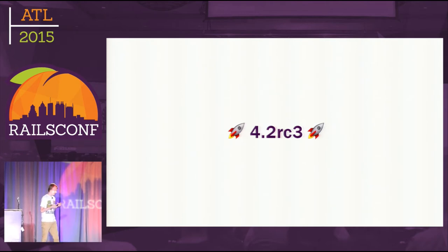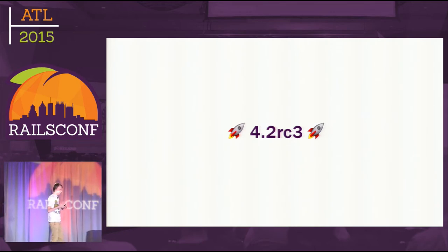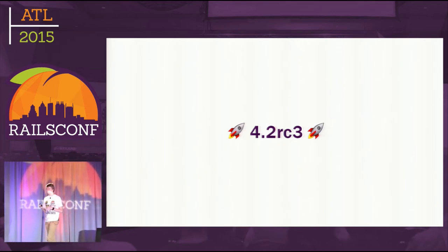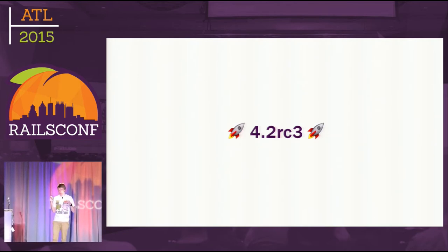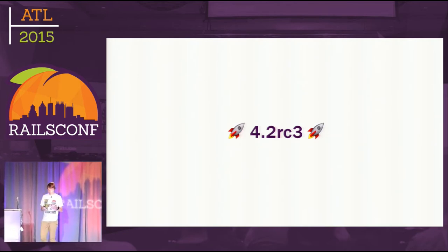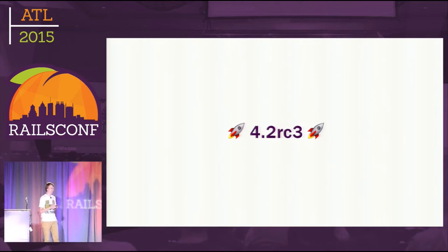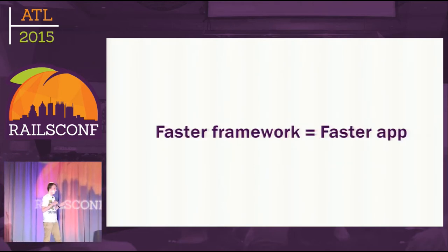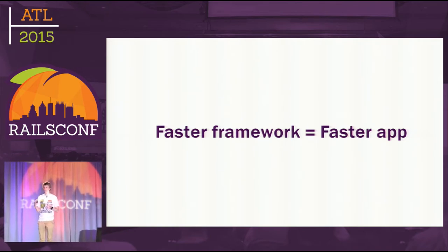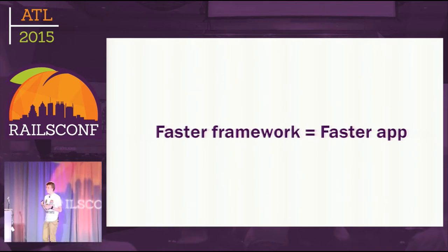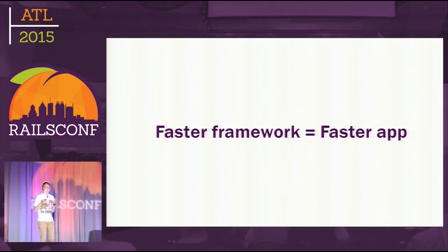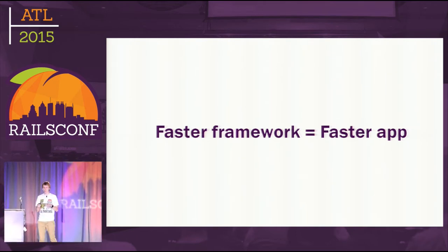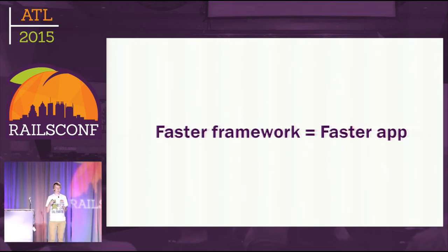Now it seems like a pain for Rails committers and contributors, but not for usual developers who only have a small or bigger Rails app. Why is it a problem for everyone? Because the faster the framework, the faster is your app. By speeding up ActiveRecord with Adequate Record patches, Aaron Patterson made your apps faster, just because ActiveRecord is usually tied with the typical Rails app.